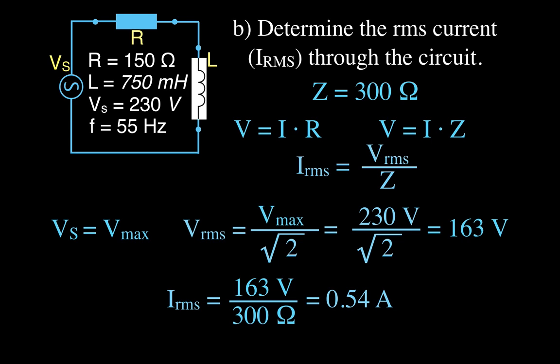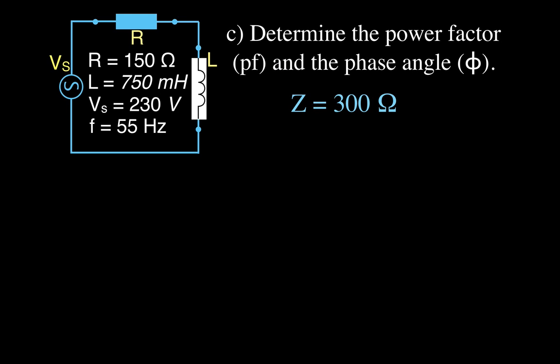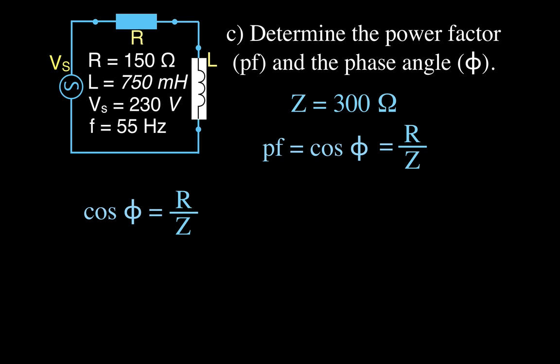Now we determine the power factor and phase angle, which is based on the impedance triangle. The power factor equals the cosine of the phase angle, and from the impedance triangle — using SOH-CAH-TOA — cosine equals the adjacent over the hypotenuse, which is R divided by Z: 150 divided by 300 ohms, giving a power factor of 0.5.